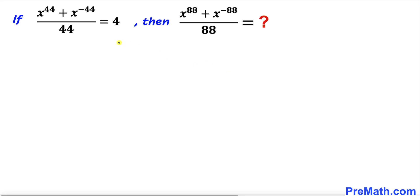Welcome to pre-math. In this video we have got this rational equation: x^44 plus x^(-44) divided by 44 equals 4, and now we are going to find the value of x^88 plus x^(-88) divided by 88.